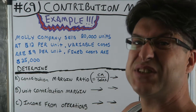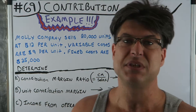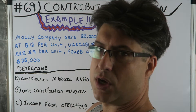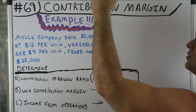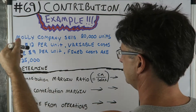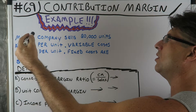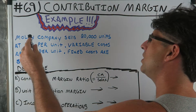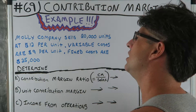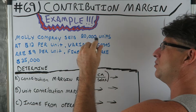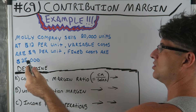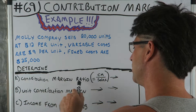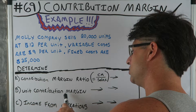Alright, this is example 69 — contribution margin example, right after 68 and before 70. Contribution margin is sales minus variable costs. Molly Company sells 20,000 units at $12 per unit. Variable costs are $9 per unit, fixed costs are $25,000.